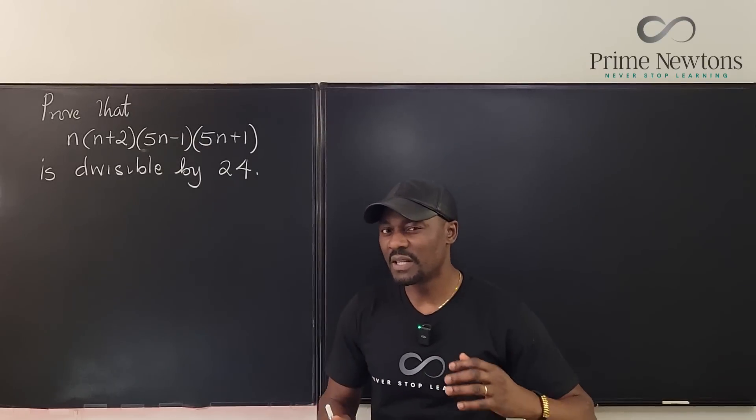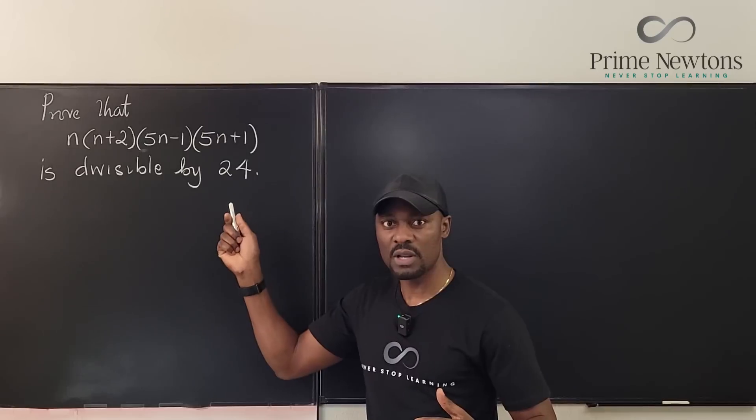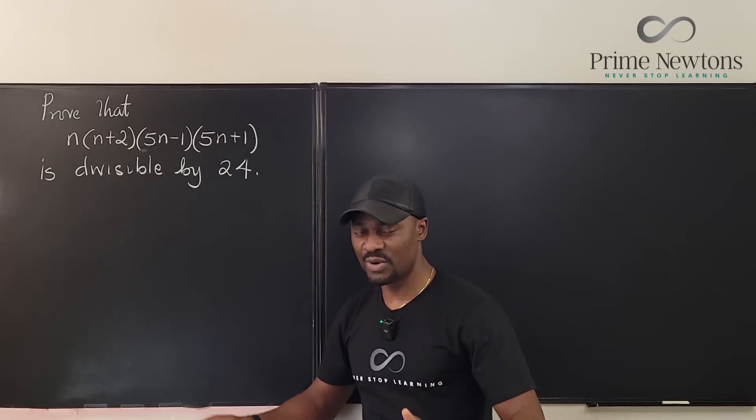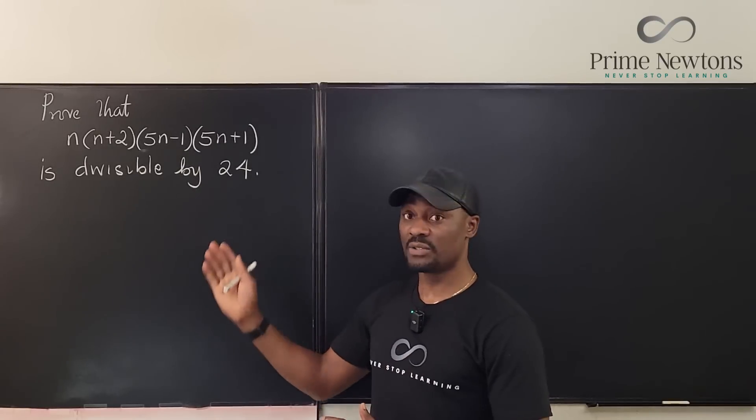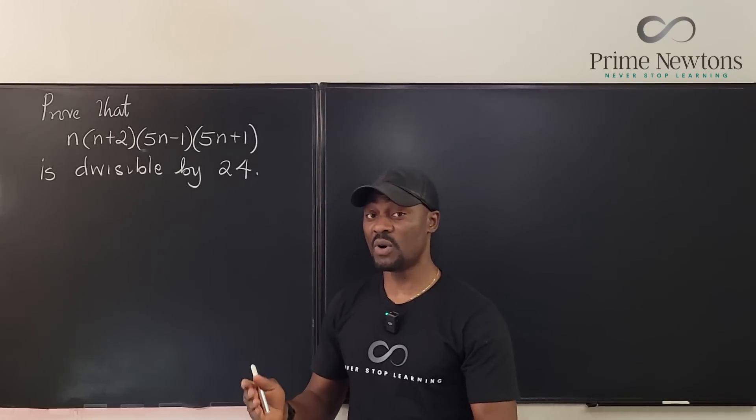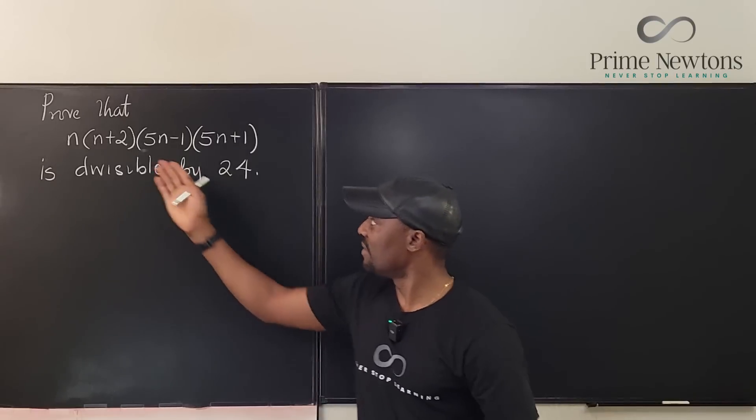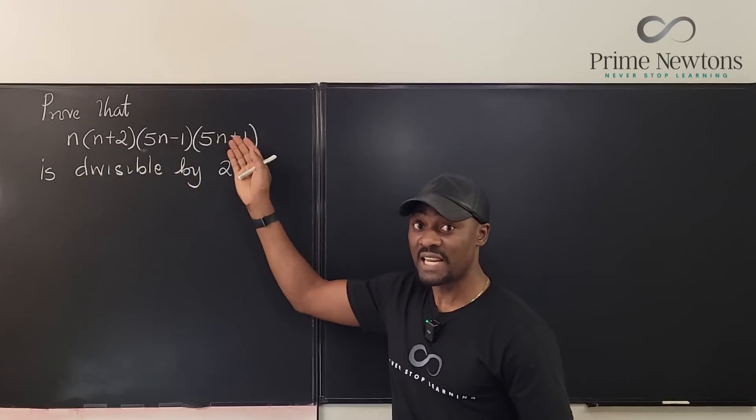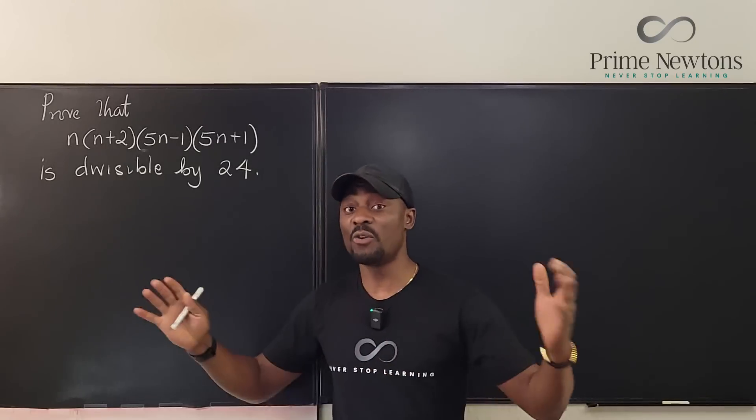So after thinking about it a little, I knew that if you had to work with 24 it was necessary to pay attention to the prime numbers that divide 24, which is 3, and how many times will 3 divide 24? 8 times. So only if I could show that this expression, no matter what n is, is divisible by 8 and is divisible by 3, I'll be good.